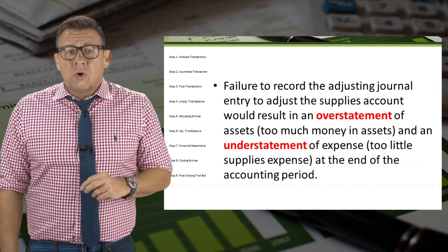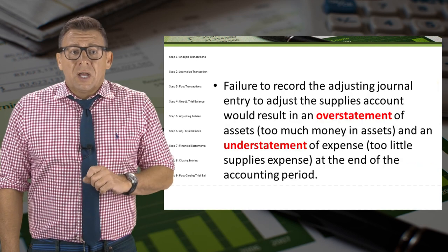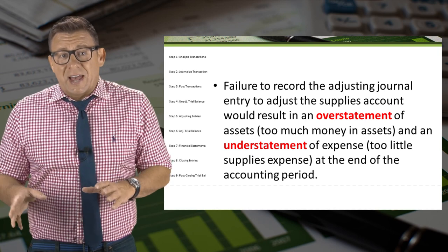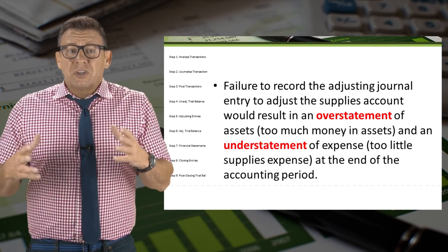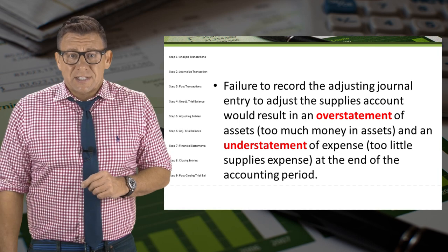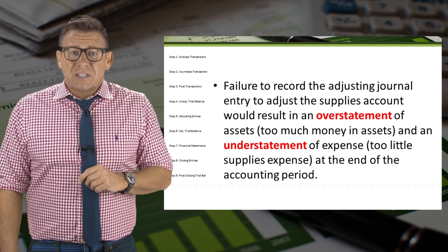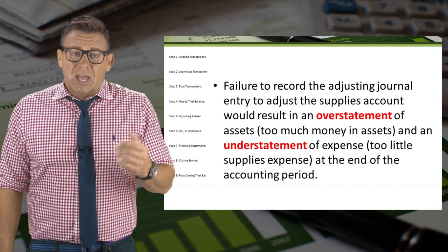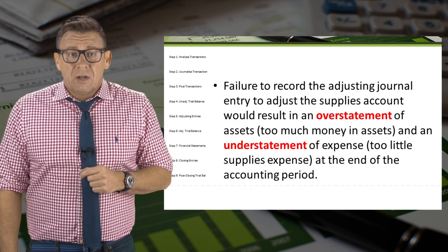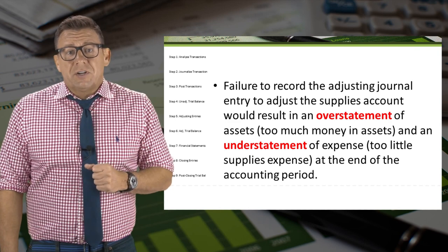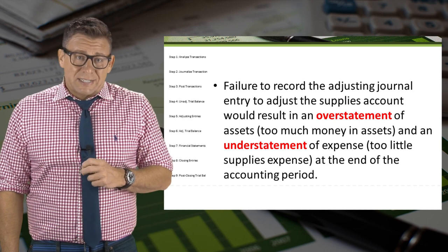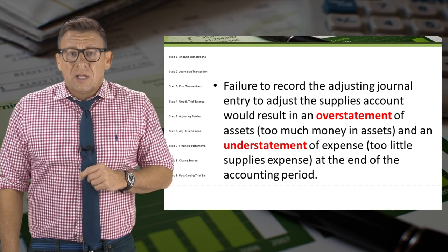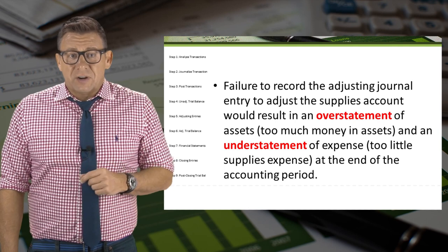Failure to record the adjusting journal entry to adjust the supplies account would result in an overstatement of assets — meaning too much money in assets — and an understatement of expense, too little supplies expense at the end of the accounting period. Overstatement and understatement are two concepts students struggle with. They definitely require critical thinking about the transactions to figure it out.